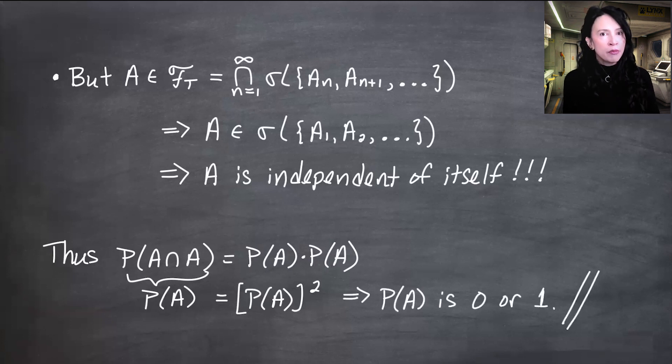We have proven that the probability of A, a general event taken from the tail sigma field, is either 0 or 1. We have proven Kolmogorov's 0-1 law. As I mentioned, it is usually very difficult, if not impossible, to determine in general whether Kolmogorov's 0-1 law is going to give you the 0 or the 1. For a particular sequence of sets it may be very hard, though sometimes you can figure out which one it is. Our greatest examples for Kolmogorov's 0-1 law are in determining convergence for sequences of random variables — which we haven't talked about at all. That's coming up next. Hope to see you in the next one.